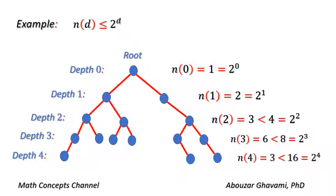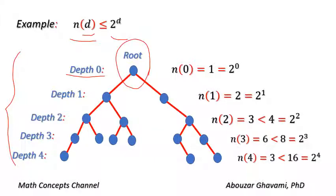Let us consider an example for a binary tree with four depths. We show that for each depth D, the number of nodes at depth D is less than or equal to two to the power of D. At depth zero, there is only one node — the root node — thus N of zero equals one, and one equals two to the power of zero. So we have the equation N of zero equals two to the power of zero.